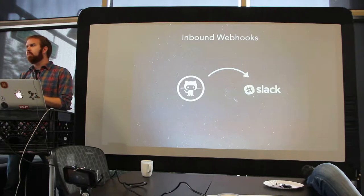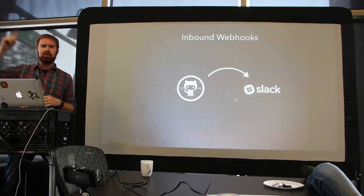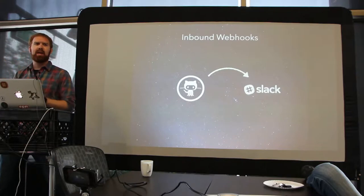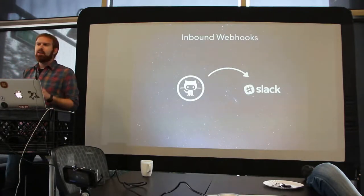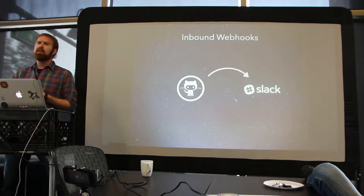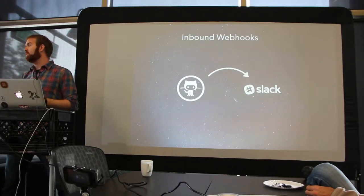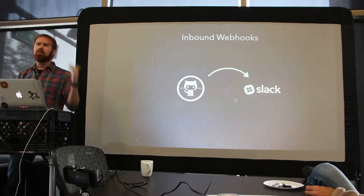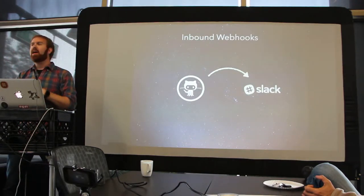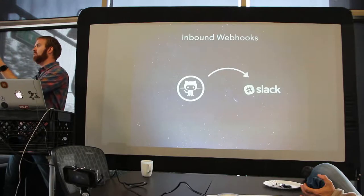For inbound webhooks, you go into the UI, go to Apps and Integrations, and create a new inbound webhook. It gives you a really long URL — that URL is essentially a secret, keep it secure. You take that URL and either use it in your own applications by sending an HTTP POST with a payload, or put it in other services that already support it. For example, in GitHub you can paste this inbound webhook URL, and now anytime someone does a pull request or commit, GitHub sends a POST to Slack, which gets converted into a message inside a channel.